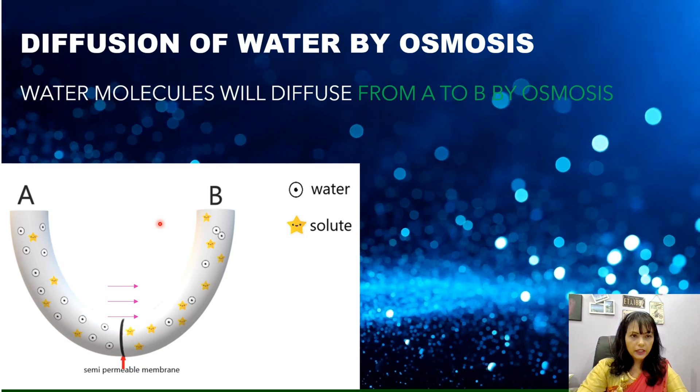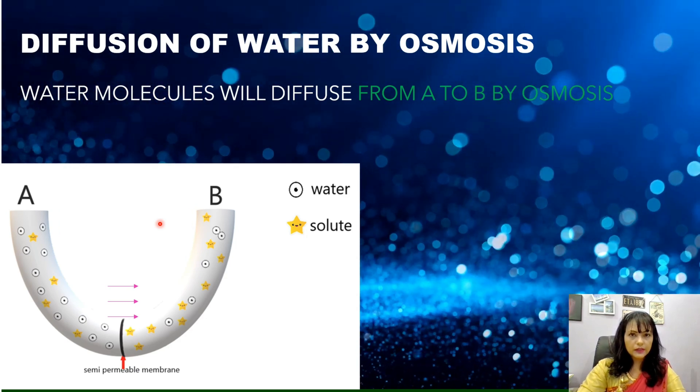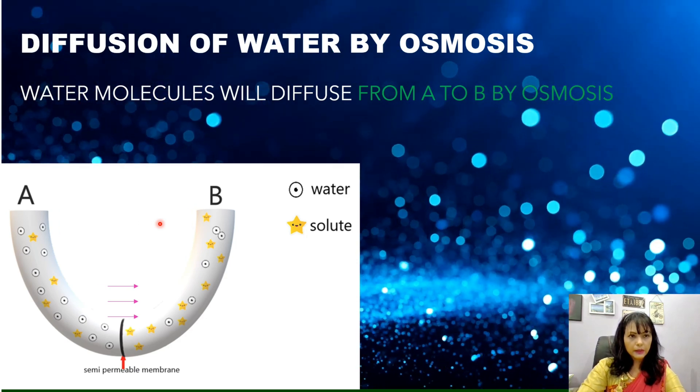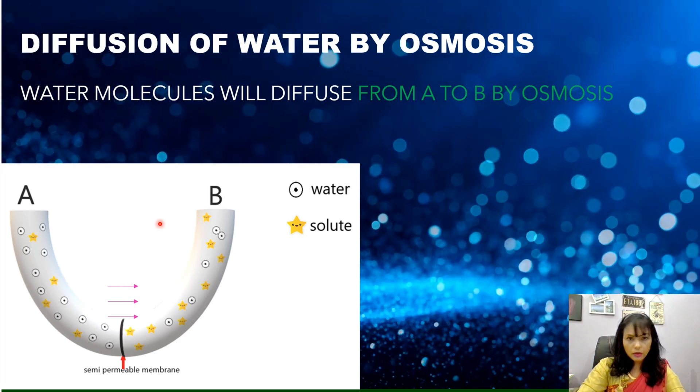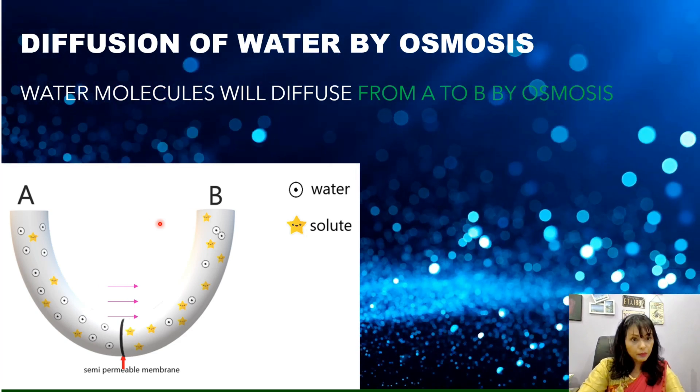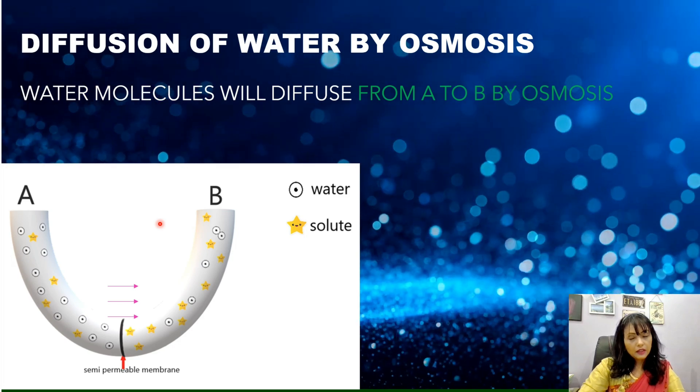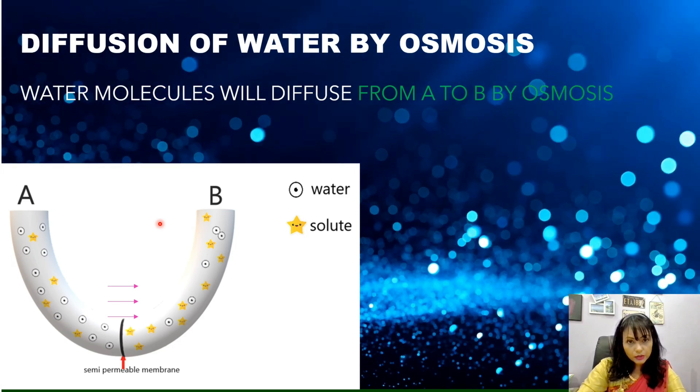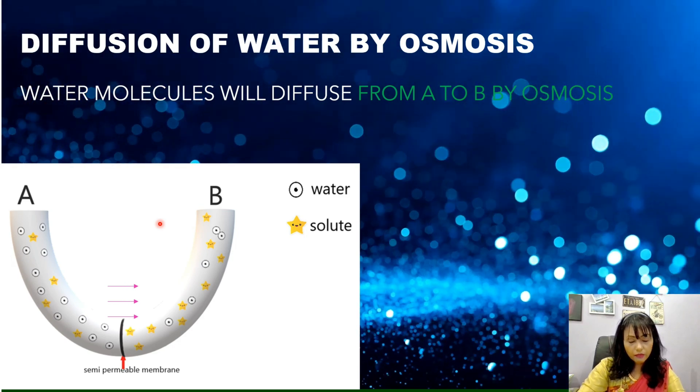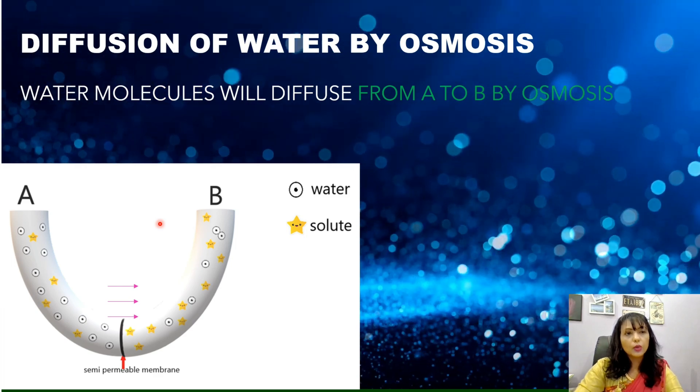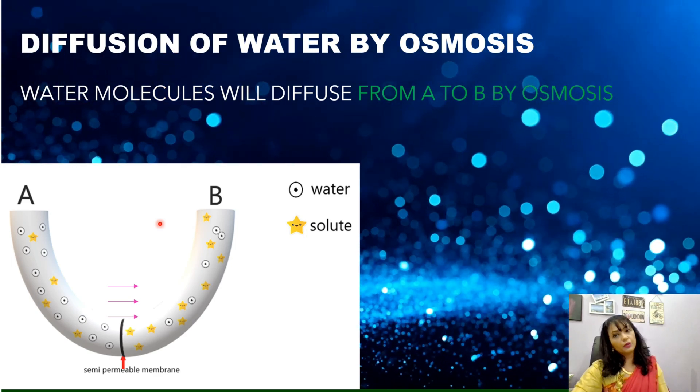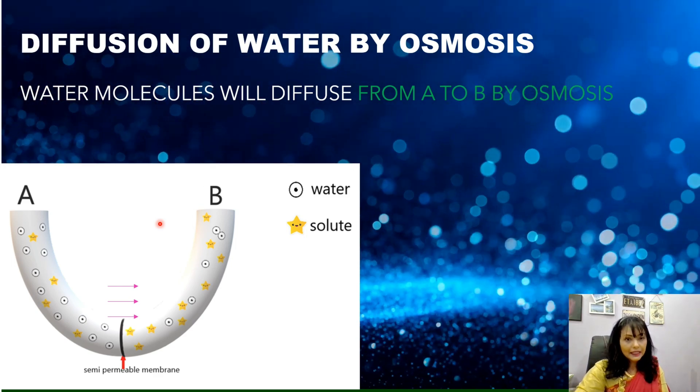When you want to define the diffusion of water for this particular system, it will be stated as water molecules will diffuse from A to B by osmosis. Note here, do not forget the word osmosis. It is very, very essential to include the mode of transportation which is by osmosis in your answer.